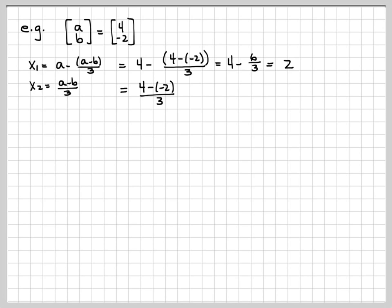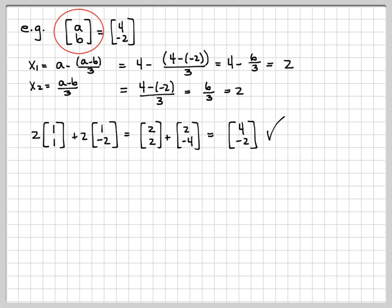Similarly, we could compute x2. It is (4-(-2))/3, which is 6/3, which is 2. This says that I should be able to take 2 times V1 plus 2 times V2. If we do the math on that, we have [2,2] and [2,-4], which if we add up is [4,-2], which is indeed equal to [a,b]. This is just a concrete example that shows no matter what vector we choose from R², we can always compute x1 and x2 such that the linear combination of V1 and V2 yields [a,b].